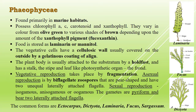We will now discuss another class of algae, Phaeophyceae, also called Phaeophyta. Members are commonly called brown algae because of the presence of the brown pigment Fucoxanthin. They possess pigments like chlorophyll A and C, which are green, but carotenoids and xanthophylls are responsible for the brown coloration. They vary in color from olive green to various shades of brown depending on the amount of Fucoxanthin.